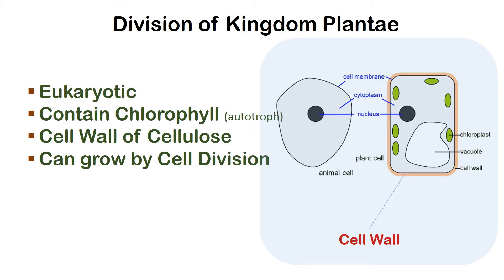Hi there. The plant cells are eukaryotic, i.e. they have a well-defined nucleus and other cell organelles. They contain chlorophyll and the plants are autotrophs, i.e. they manufacture their own food using sunlight. The cell walls are made of cellulose.